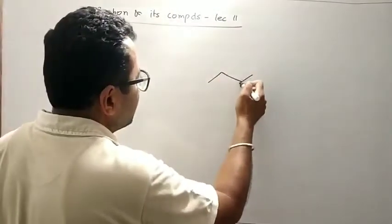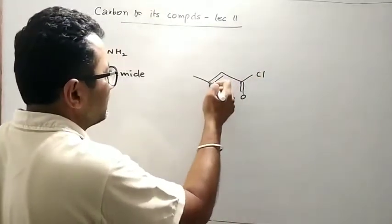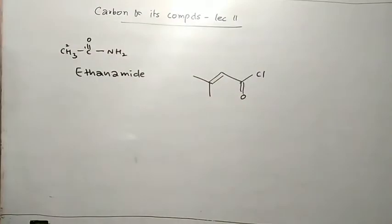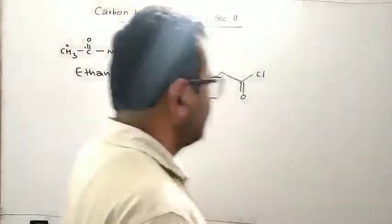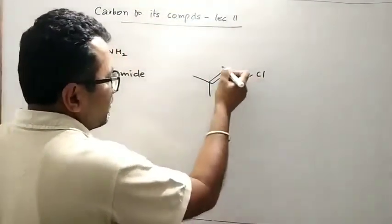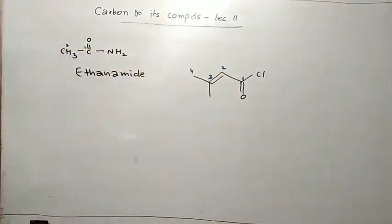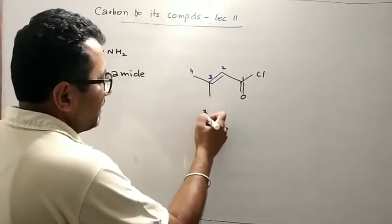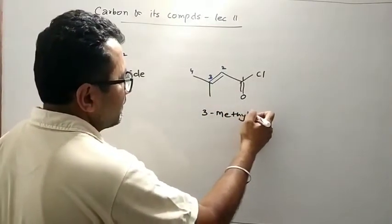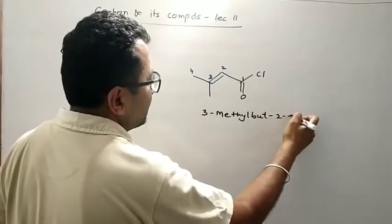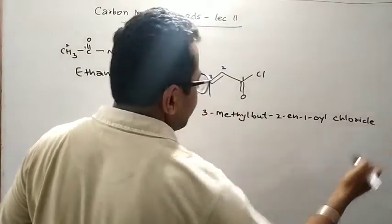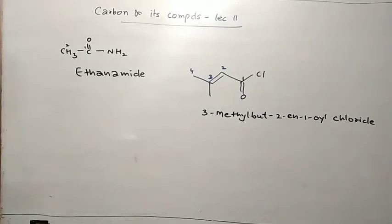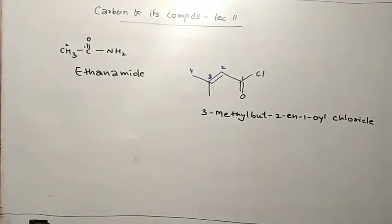Second compound. Now there is C=O and adjacent to this C=O the group is Cl. So this is your acid chloride. Do the numbering like this. So 3-methylbut-2-enoyl chloride. Oyl chloride is the suffix for acid chloride compounds.